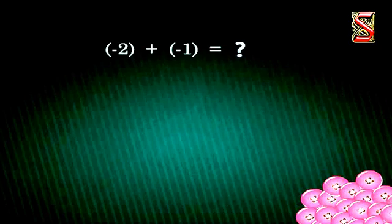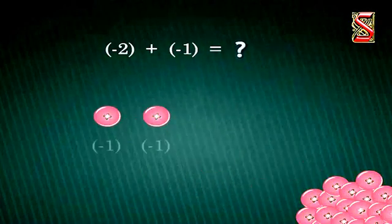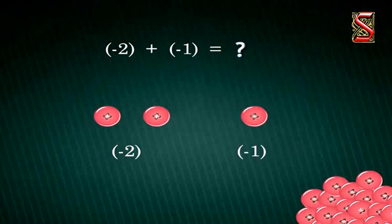Let us try doing addition using the red buttons. Try to add negative 2 and negative 1. For this, you will need to take two red buttons for negative 2 and one red button for negative 1. So there is a total of three red buttons. Therefore, we can see that by adding negative 2 and negative 1, we get negative 3.